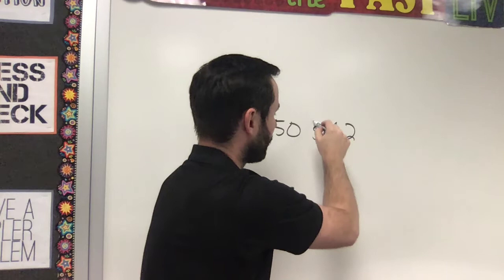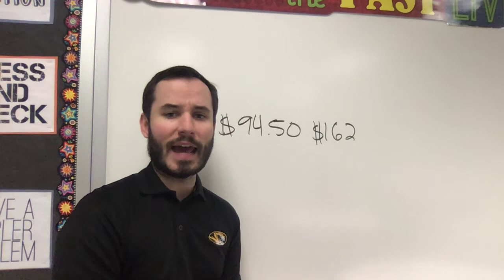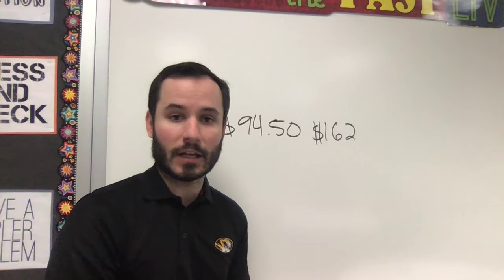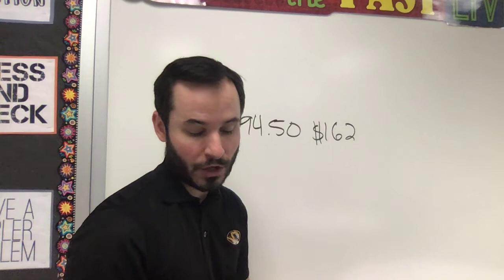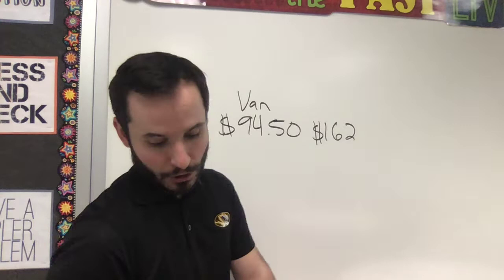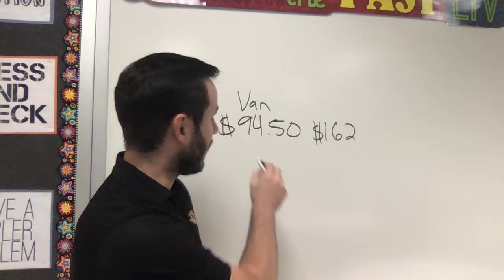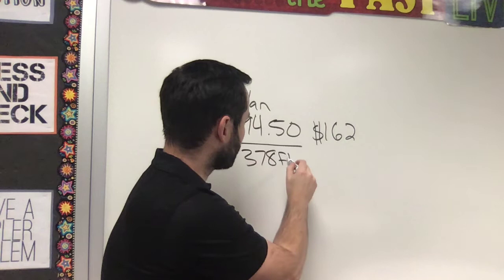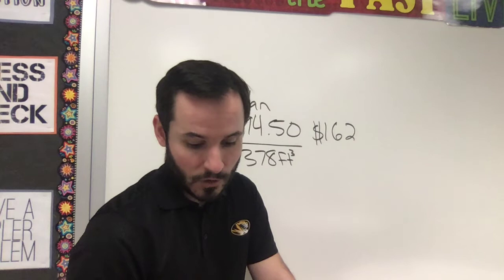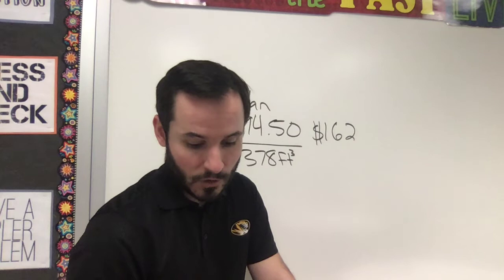We know we're getting two different things with those prices, but the question is what are we actually getting? When you rent a moving van, you're renting the space it can hold — that's why we're looking at a volume question here, and that's why the table gives you the length, width, and height. So we need to first find the volume of the van and the small truck. For the van, the dimensions are 10.5 × 6 × 6, giving us a volume of 378 cubic feet. For the small truck, the dimensions are 12 × 8 × 6.75, giving us a volume of 648 cubic feet.